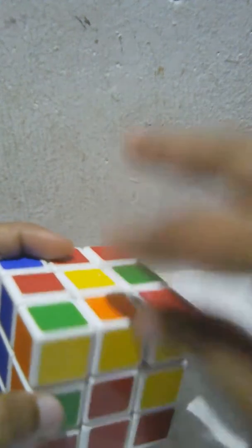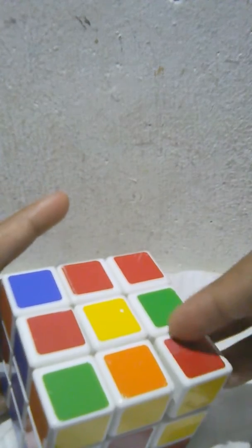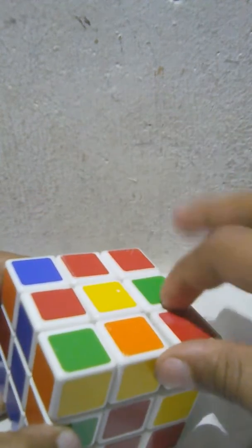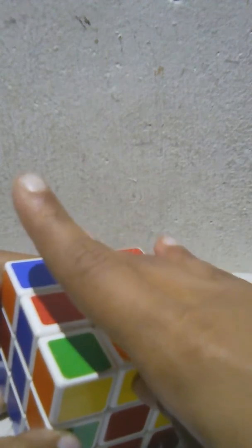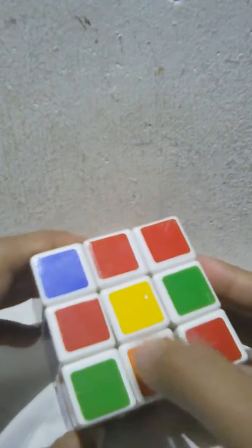Now, what we have to do is we have to find edge piece. Edge piece means which comes here, here, here, here. Not here. Like a plus. Here, here, here, here.